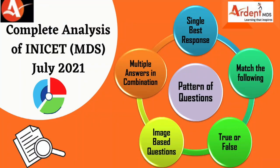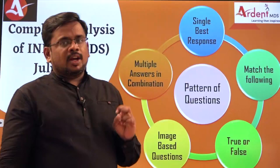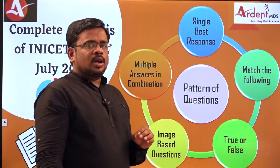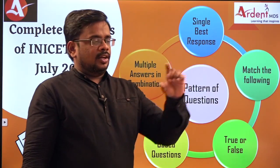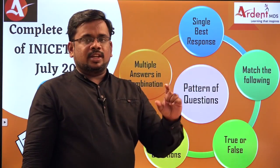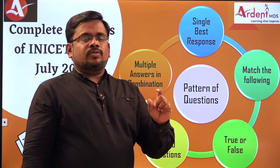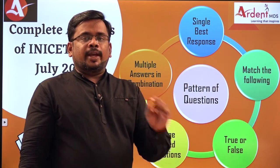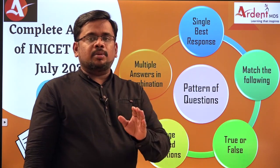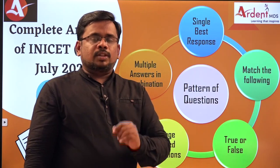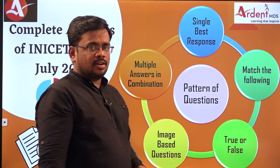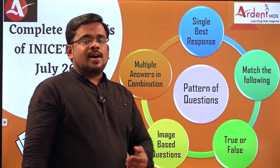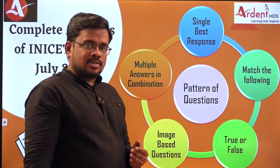The pattern of questions included multiple choice questions and multiple option questions where options A, B, C, and D were given and you had to select which combinations are true — such as A and C, A and B, or all of them. True or false type questions were also asked.